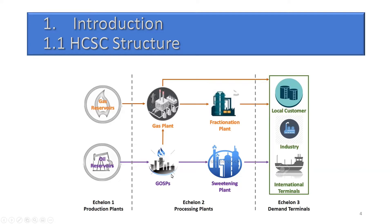Oil goes to GOSP — Gas Oil Separator Plants — where associated gas is separated from oil. Oil is then transported for processing, refinery, and sweetening. Associated gas and non-associated gas go to fractionation to produce different gas products. We end up with distribution centers satisfying customer demand. We consider three types of demand: domestic, industrial, and international. These activities are classified into three echelons: echelon one — production plants; echelon two — processing plants; and echelon three — demand terminals.